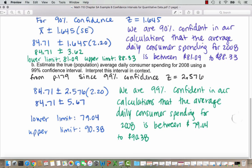To put this all together with a sentence, we say that we are 99% confident in our calculations that the average daily consumer spending for 2008 is between $79.04 and $90.38.